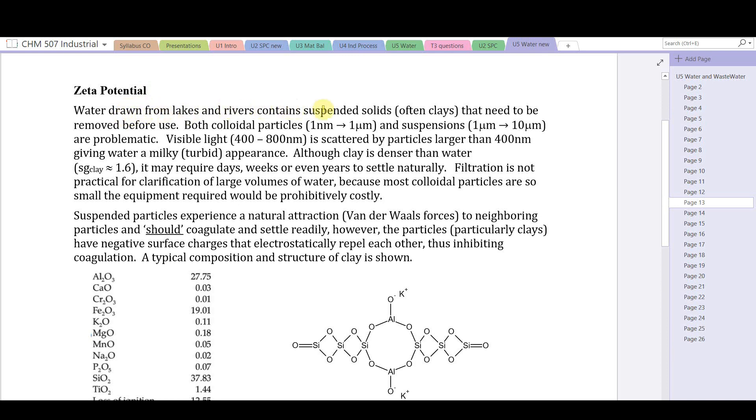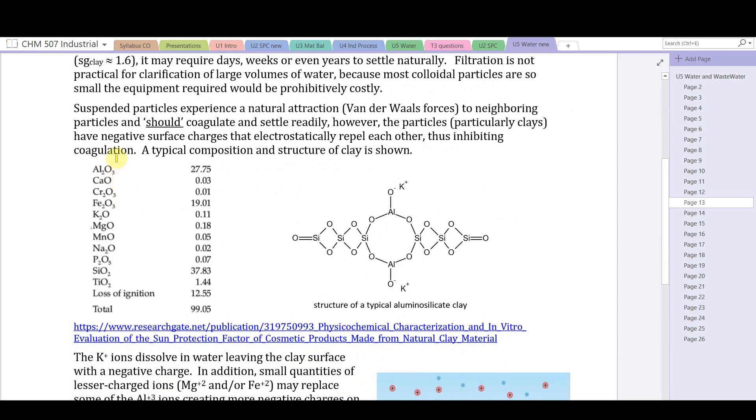Water drawn from lakes and rivers contains suspended solids, often clay, that need to be removed before use - both colloidal particles (in the range of one nanometer to one micron) and suspensions (one micron up to ten microns) are problematic. Visible light in the range 400 to 800 nanometers is scattered by particles larger than 400 nanometers, giving water a turbid appearance. Although clay is denser than water (specific gravity typically around 1.6), it may require days, weeks, or even many years to settle naturally. Filtration is not practical for clarification of large volumes of water like would be used by a municipality.